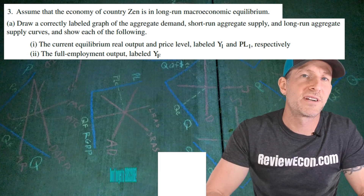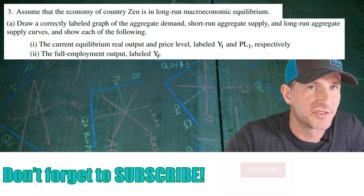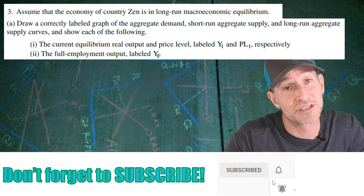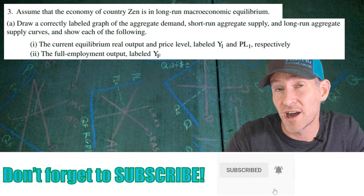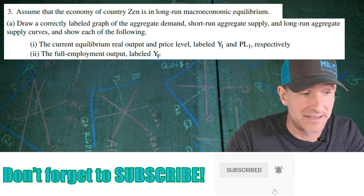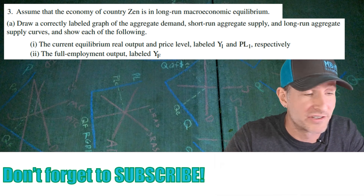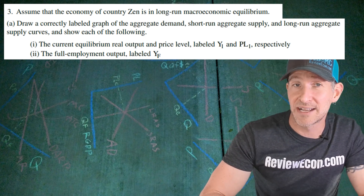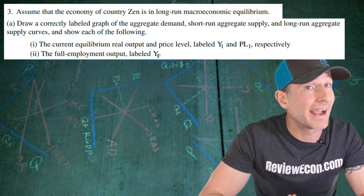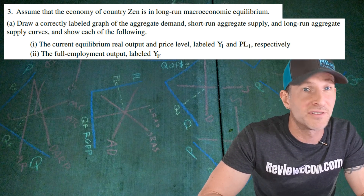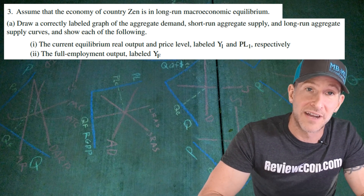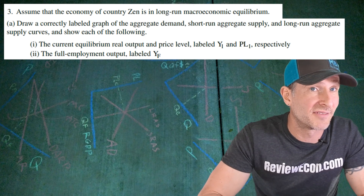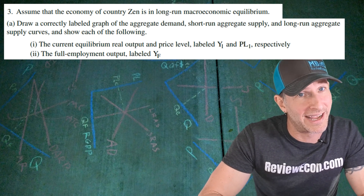This question starts off with the country of Zeta, currently in long-run equilibrium. First, we are going to draw an ASAD model showing the country in long-run equilibrium. We will label the current real output Y1 and the current price level PL1. Finally, we are going to label the full employment level of output YF.